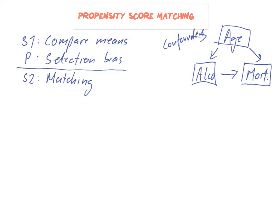With matching, we take all the variables — age, gender, food habits, and so on — and match a person who drinks with another person of the same age, same gender, same food habits who does not drink. We do that for all the people we have, comparing like to like. This solves the problem of comparing different groups.